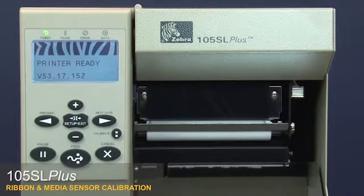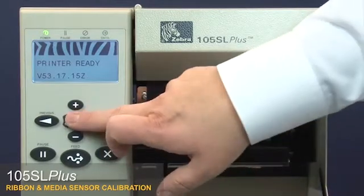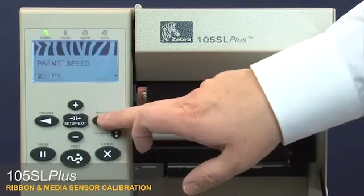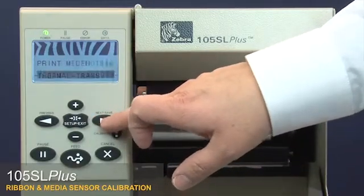105SL Plus ribbon and media sensor calibration. Press setup. Press next to go to the media and ribbon calibrate menu option.